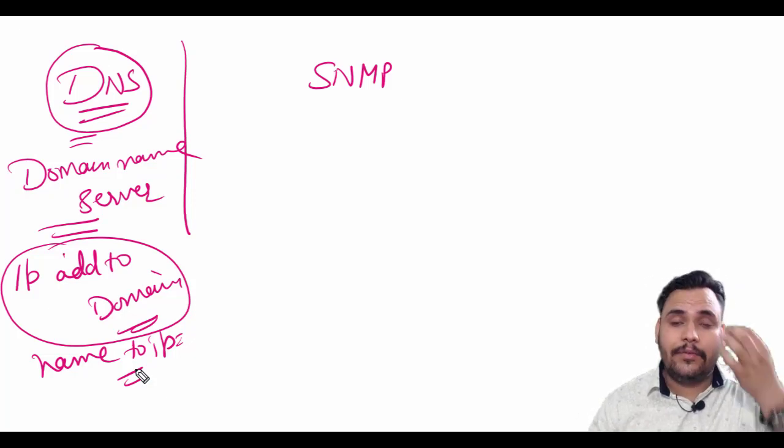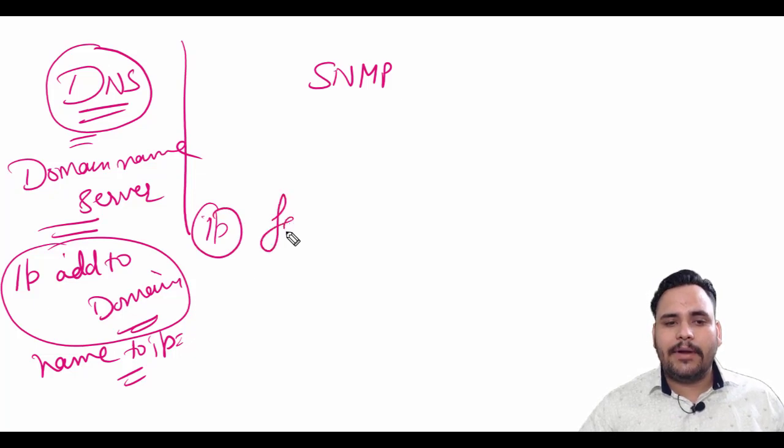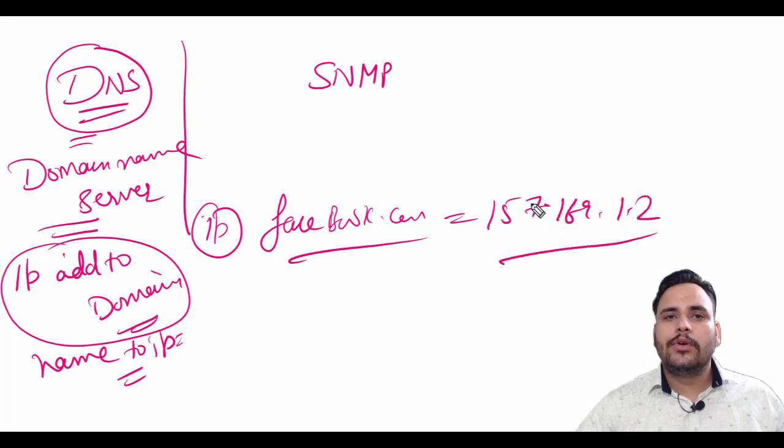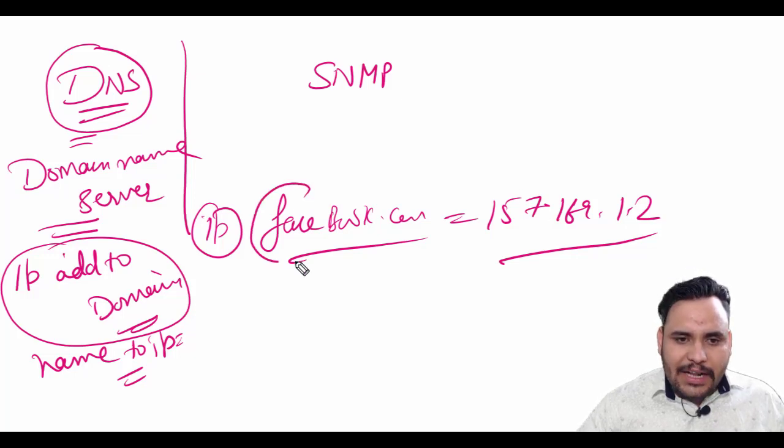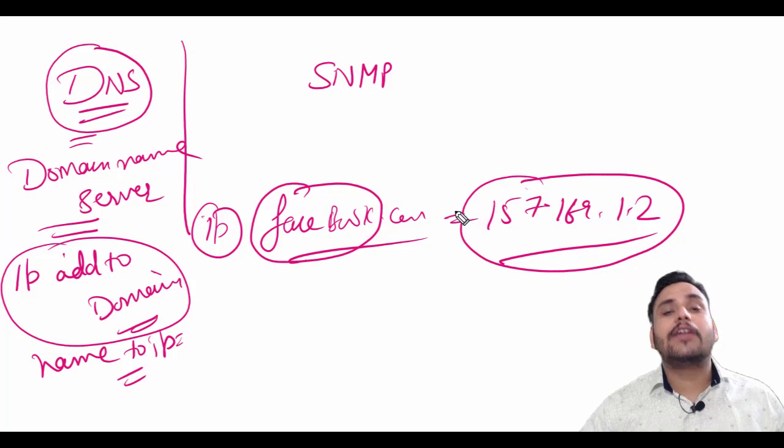Each and every web server has its own IP address. For example, Facebook.com - Facebook's IP is 157.169.1.2. Facebook is the domain name and the IP address is assigned to the server of Facebook.